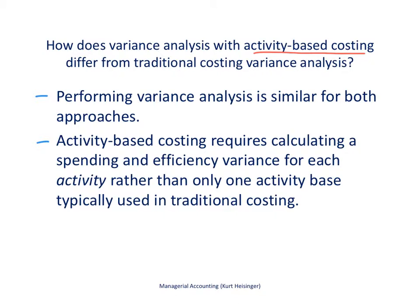Now we're talking about activity-based costing. What if we need to perform variance analysis in a system that uses activity-based costing? It's similar for both approaches, but instead of looking at just one allocation base, we're looking at many allocation bases, and we're analyzing the variances for each of those allocation bases. Activity-based costing requires calculating a spending and efficiency variance for each activity, rather than just one activity.